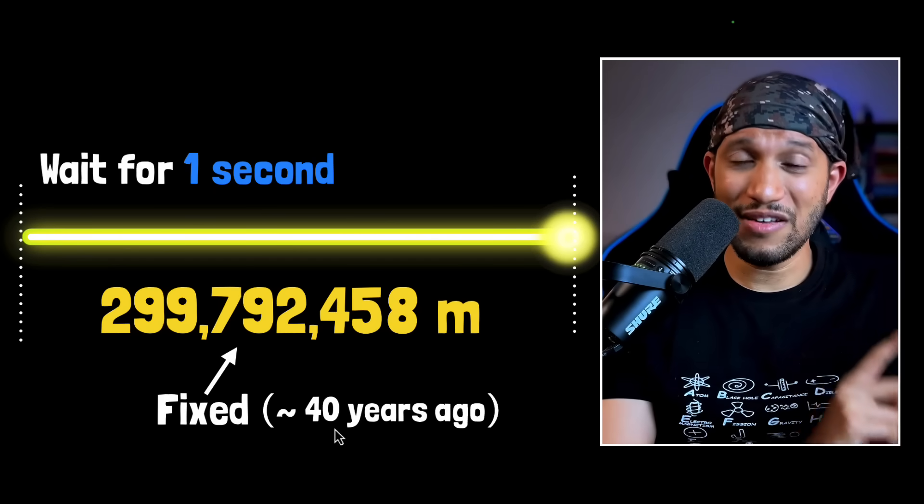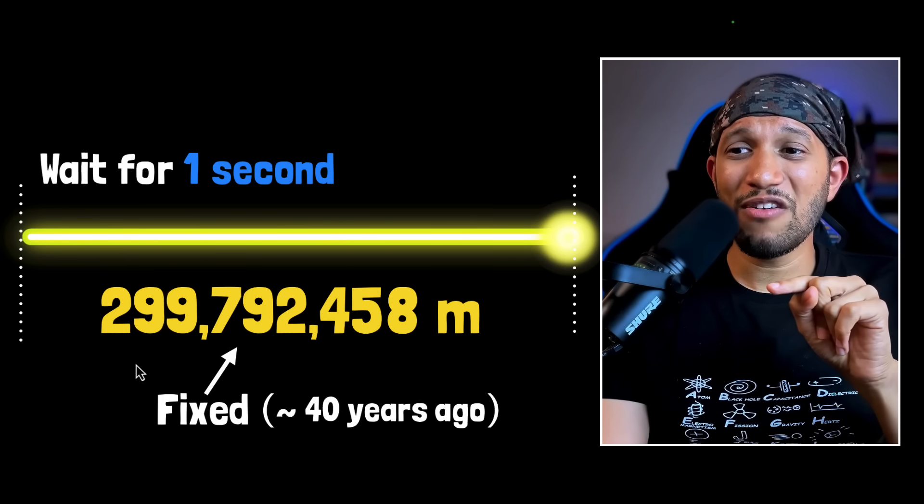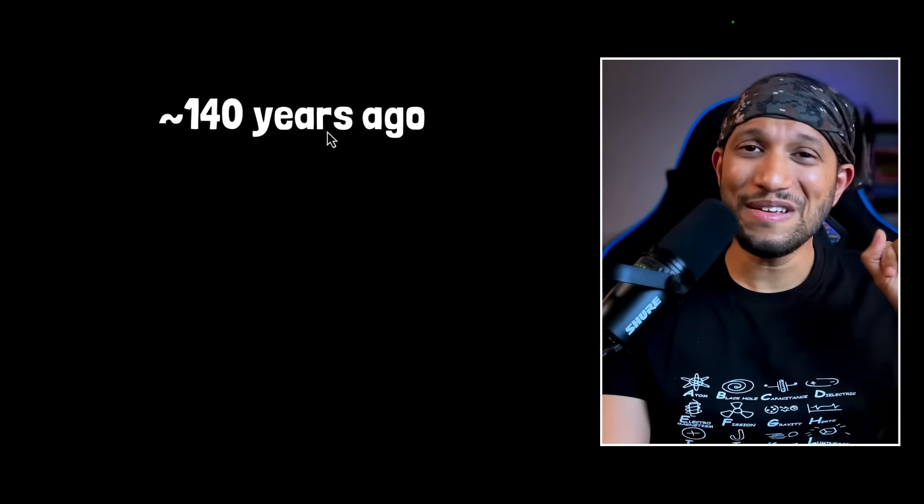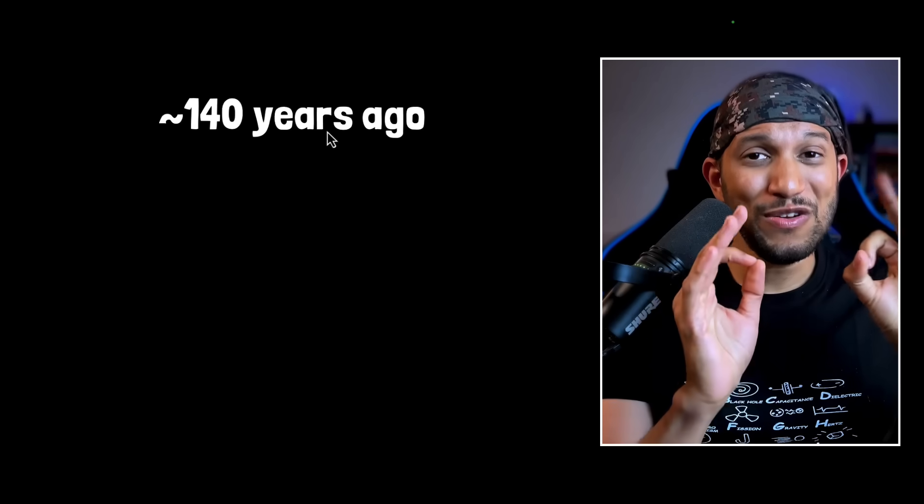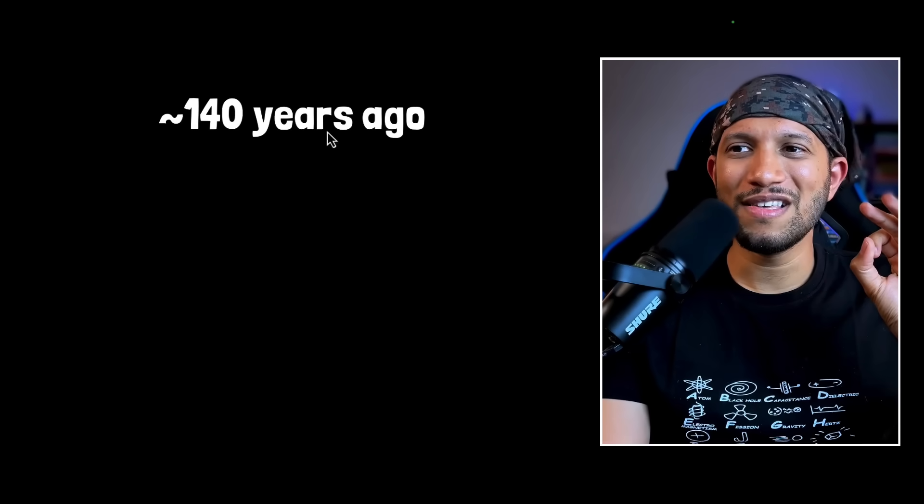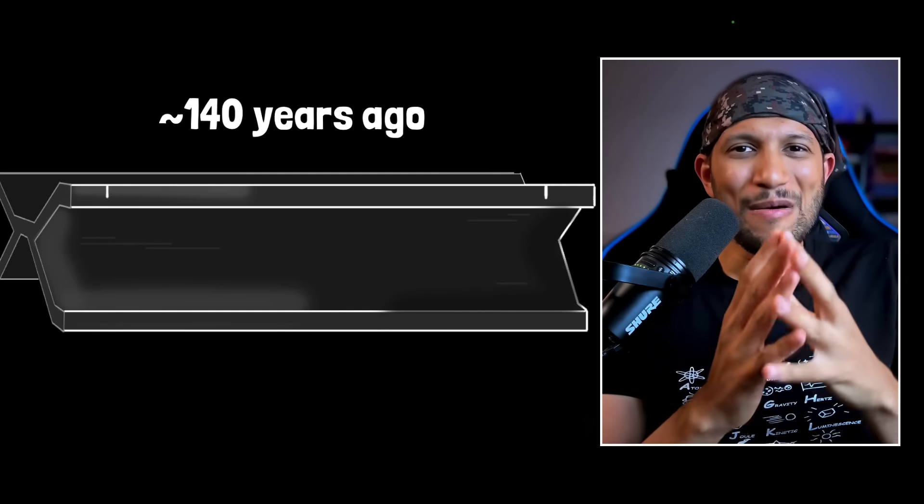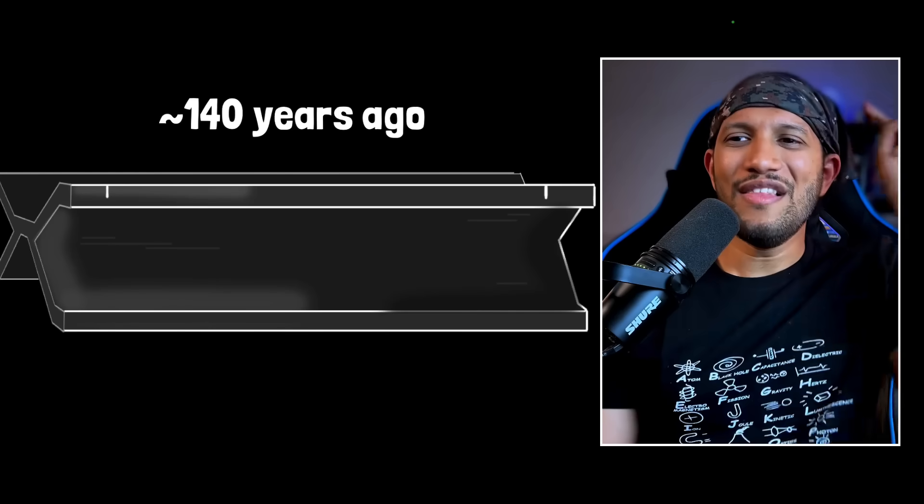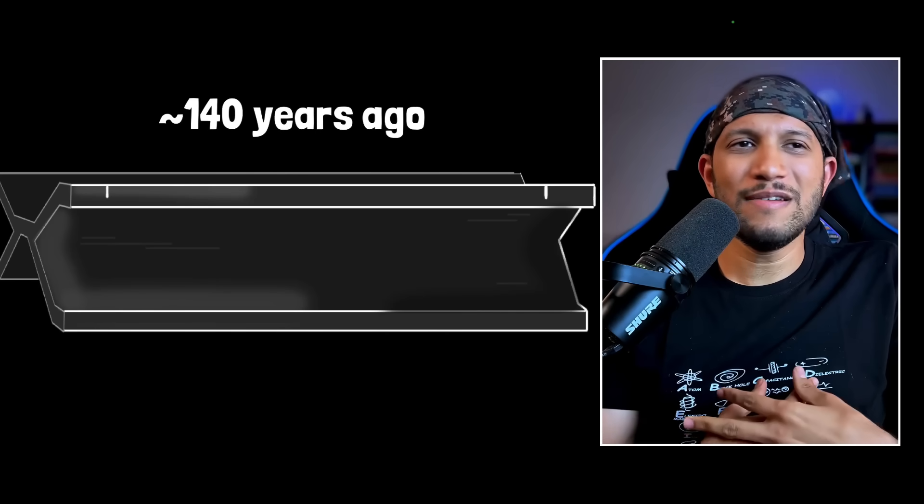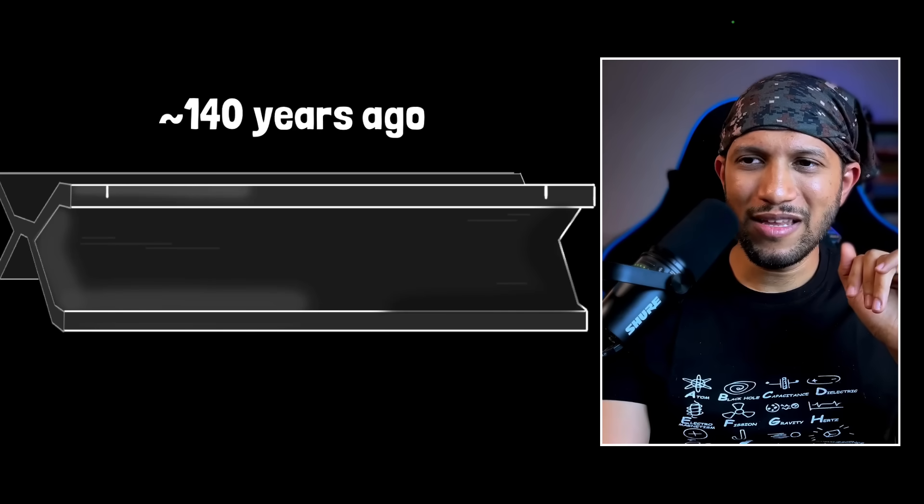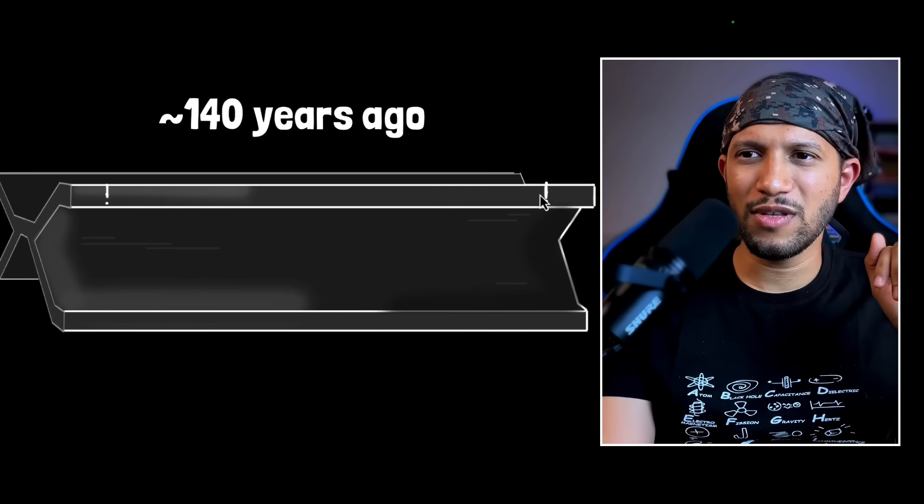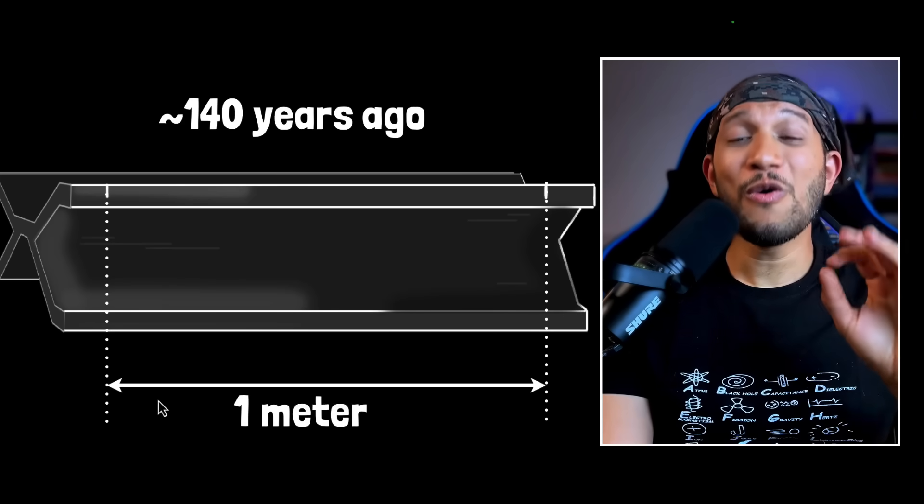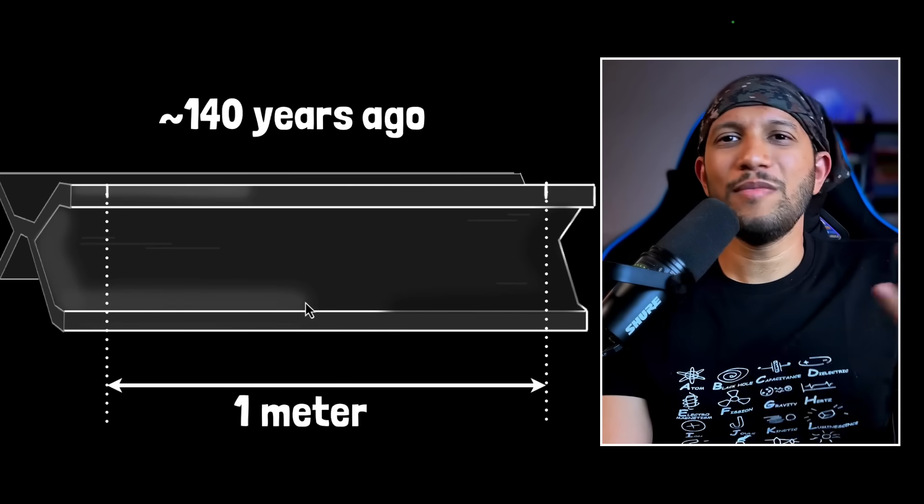Before this, we had a different definition of the meter. And to understand why we fixed this, we have to go back in time and look at what that definition was. If you go back about 140 years ago, the definition of the meter that we had just built was this: we made a meter bar, like a sacred meter bar. We kept it in France and we said, you know what? The length of that meter bar, we called it one meter.